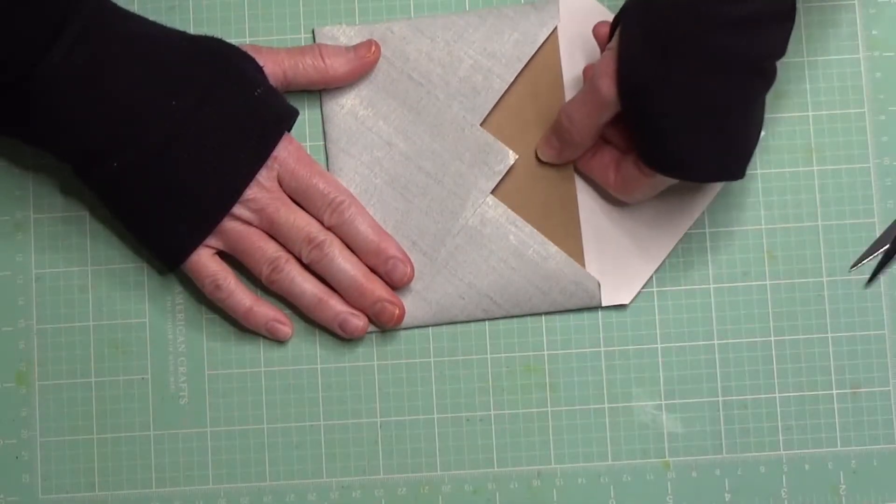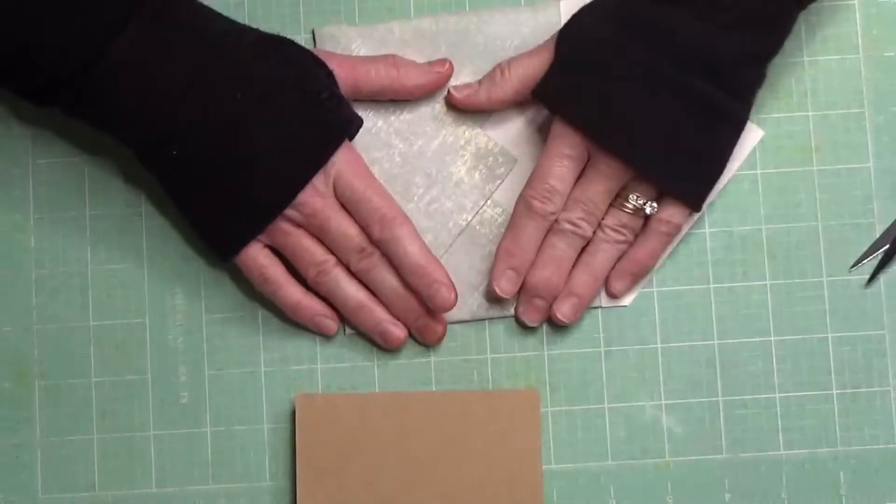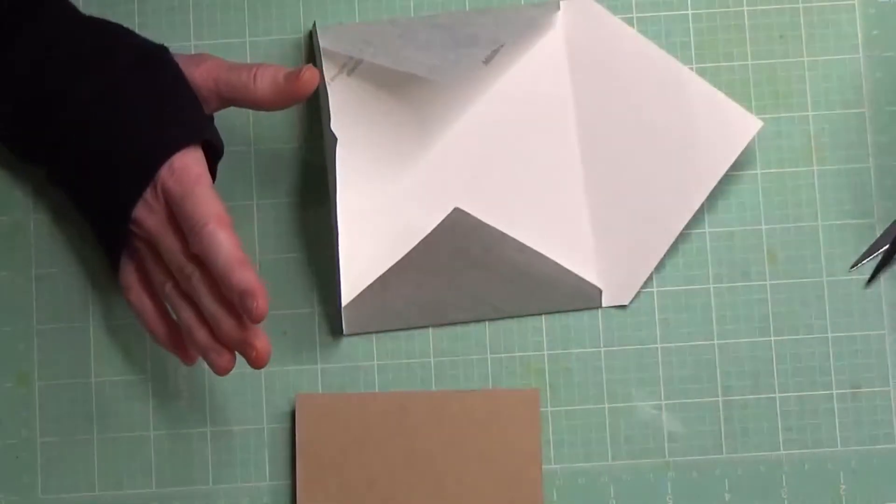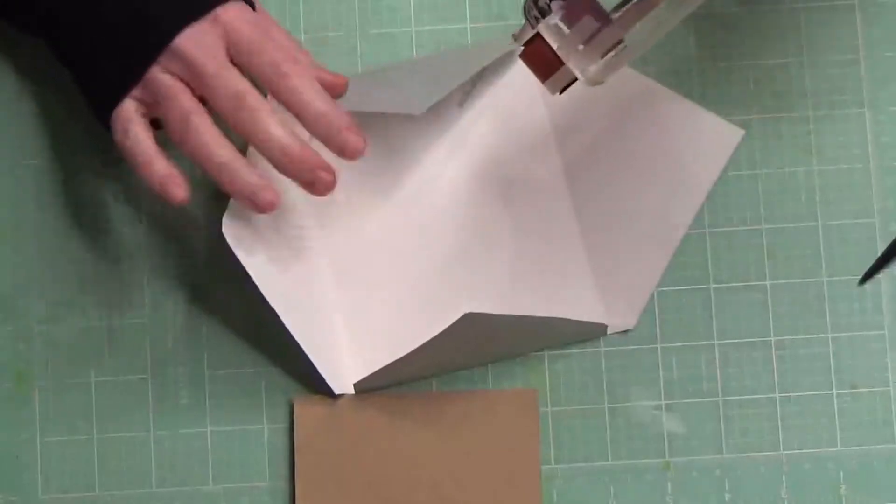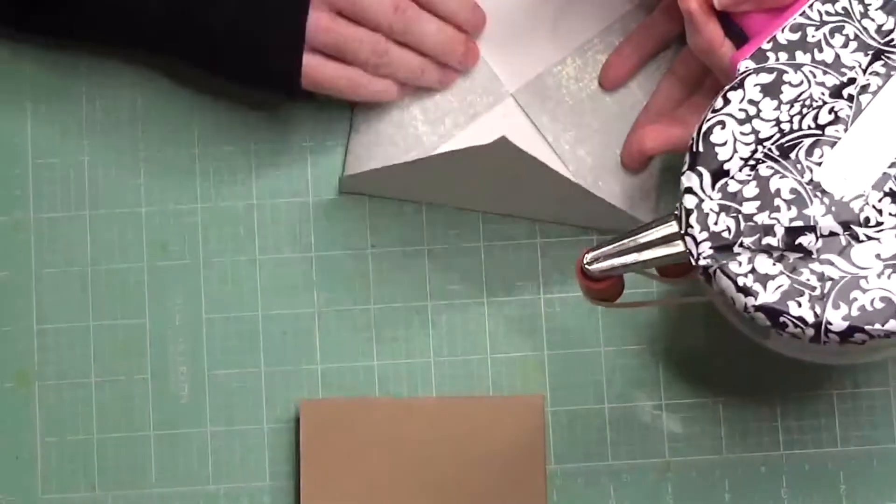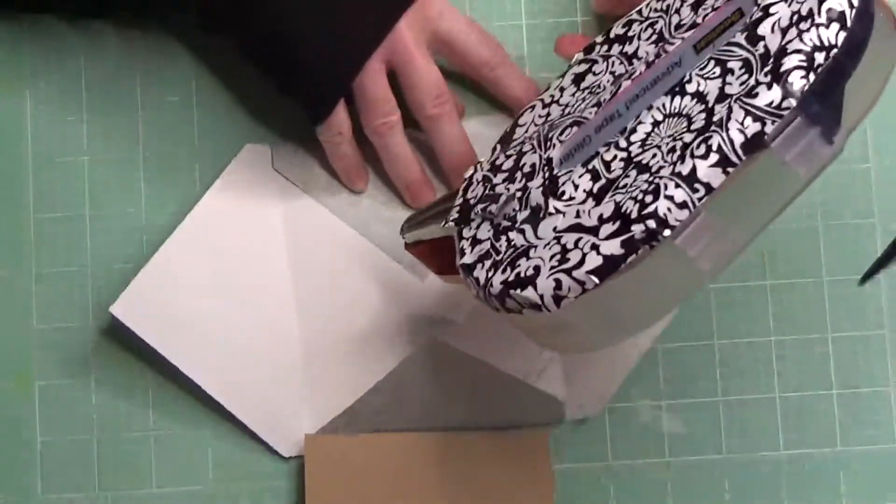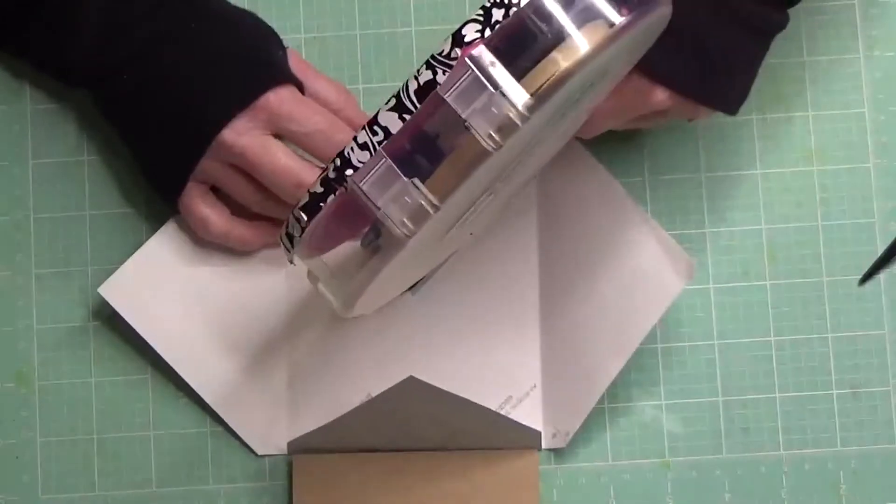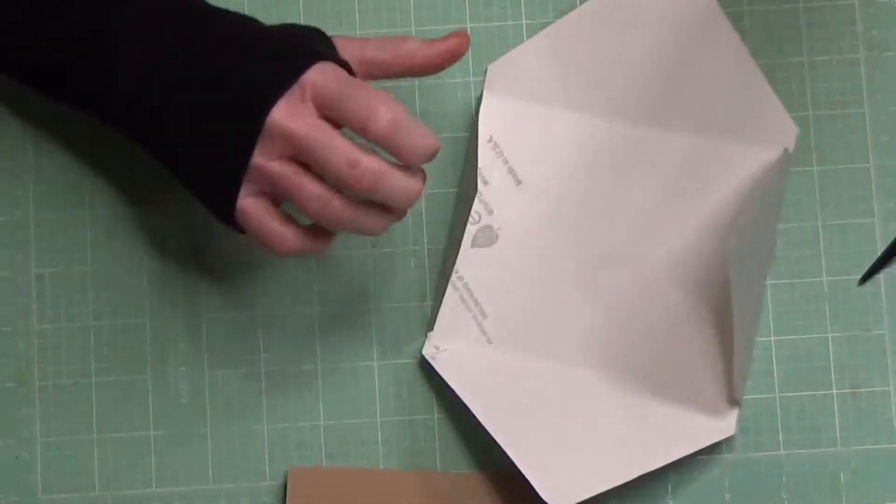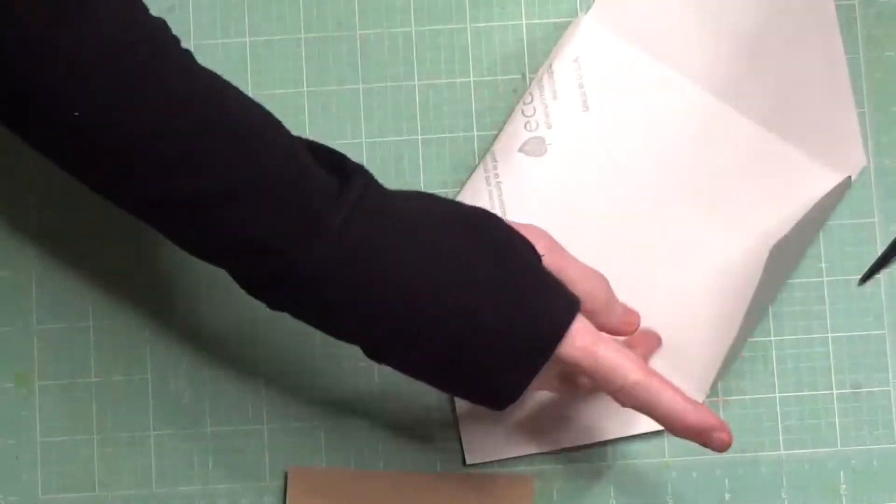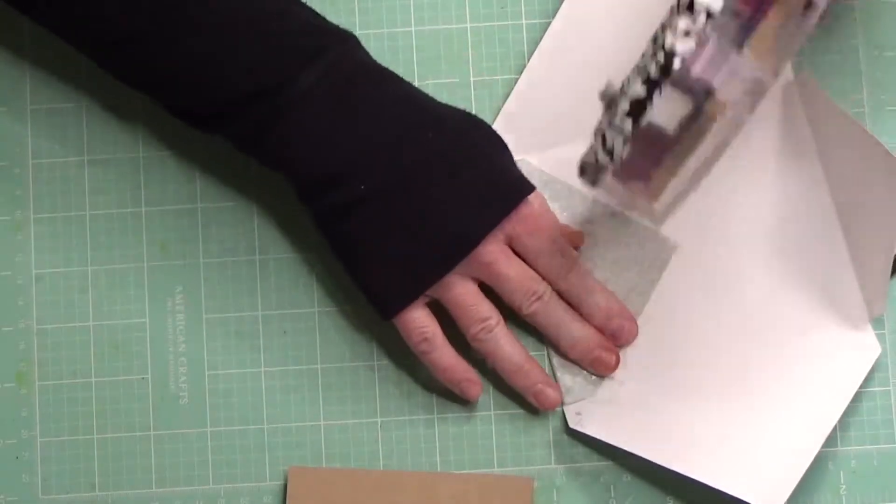And now again, one last check before we add adhesive and then grab whatever it is that's your favorite adhesive, but definitely something permanent. I'm going to use my ATG and the adhesive that I have in here right now is one that's for metal and metallic things. So it's quite strong. I think there's less on the roll though.